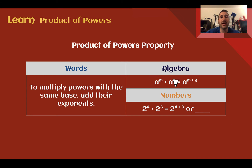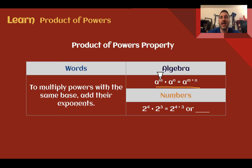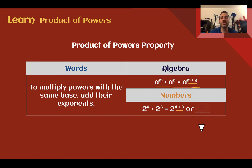So the product of powers property: to multiply powers with the same base, you're going to add their exponents. Written algebraically, something to the m power times the same base to a different power, you add the two exponents together. So 2 to the fourth times 2 to the third would be 2 to the 4 plus 3, which is 2 to the seventh power.